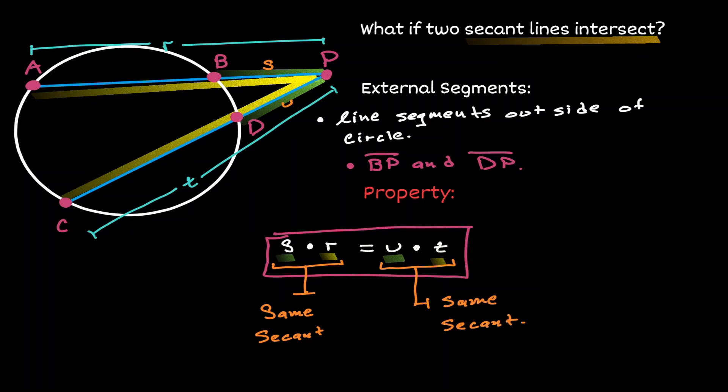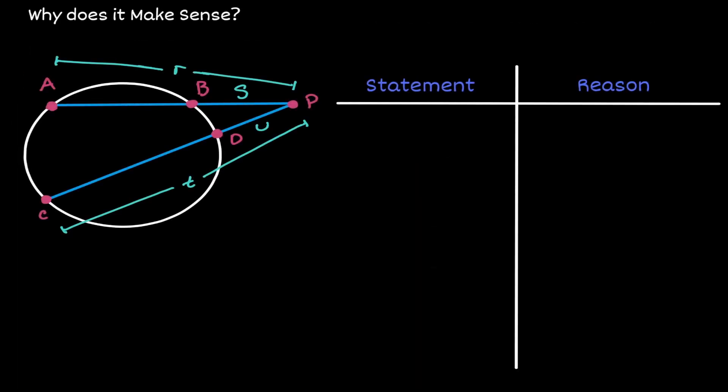Now let's show why this is true. We have the same scenario as before: two secant lines intersecting at a point.